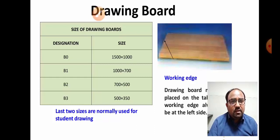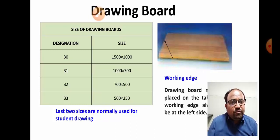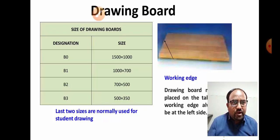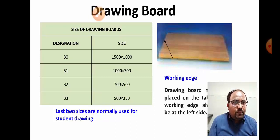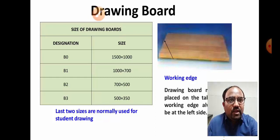In the B0 size, 1500 represents the length and 1000 represents the width. Generally, the last two sizes — B2 and B3 — are normally used for student drawing. The drawing board size depends on the size of the drawing sheet.